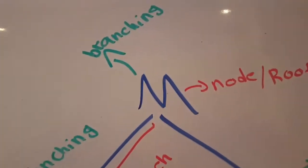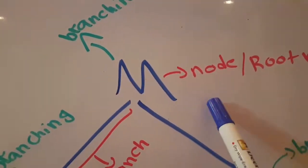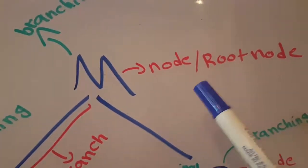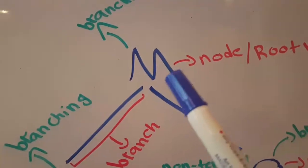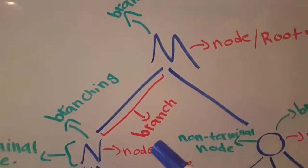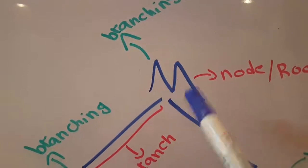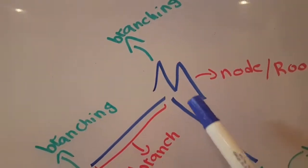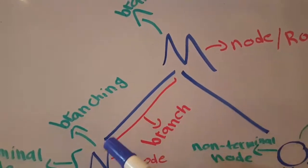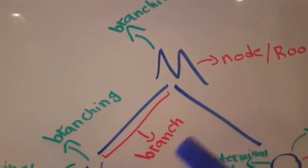Now let me talk about the M part in this tree. I could call it so many things. I could call it a node because it is a part of the tree. I could also call it a root node because it is the mother and the daughters go underneath it. I could also say this one is branching because there are multiple branches going under this letter — the first branch and the second branch.